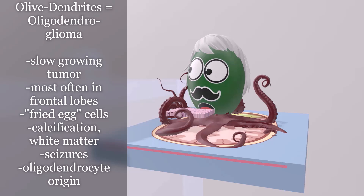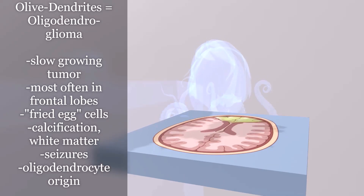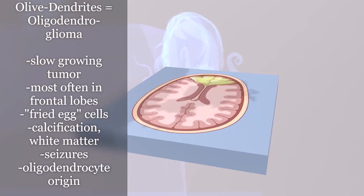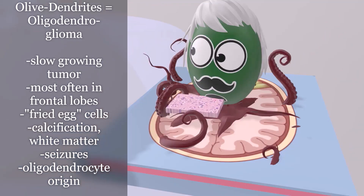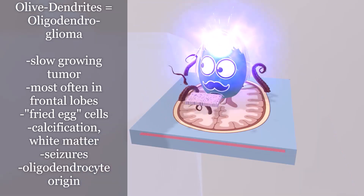Oligodendroglioma is most often found in the frontal lobes. The olive guy is standing on a classic image of oligodendroglioma showing the tumor in the frontal lobes. He is eating a histologic picture of the fried egg cells — round nuclei seen on histology of an oligodendroglioma section. This tumor is often calcified, a tumor of the white matter in the frontal lobes. An old man having seizures reminds us of seizures occurring when the tumor presses on white matter. Finally, oligodendroglioma is of oligodendrocyte origin.